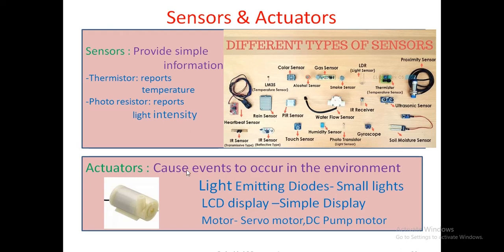Actuators cause events to occur in the environment. Examples include light emitting diodes, LCD display, motors, and buzzers. There are different varieties of motors: servo motor, stepper motor, and DC motor. There is also a DC pump motor, which became very famous during COVID-19 — many companies used an automatic alcohol dispenser, using a submersible DC pump motor in a bowl. This DC pump motor helps pump sanitizer from the bowl and dispense it outside. It has only two terminals — positive and negative — but to drive this motor you require a higher current rating.